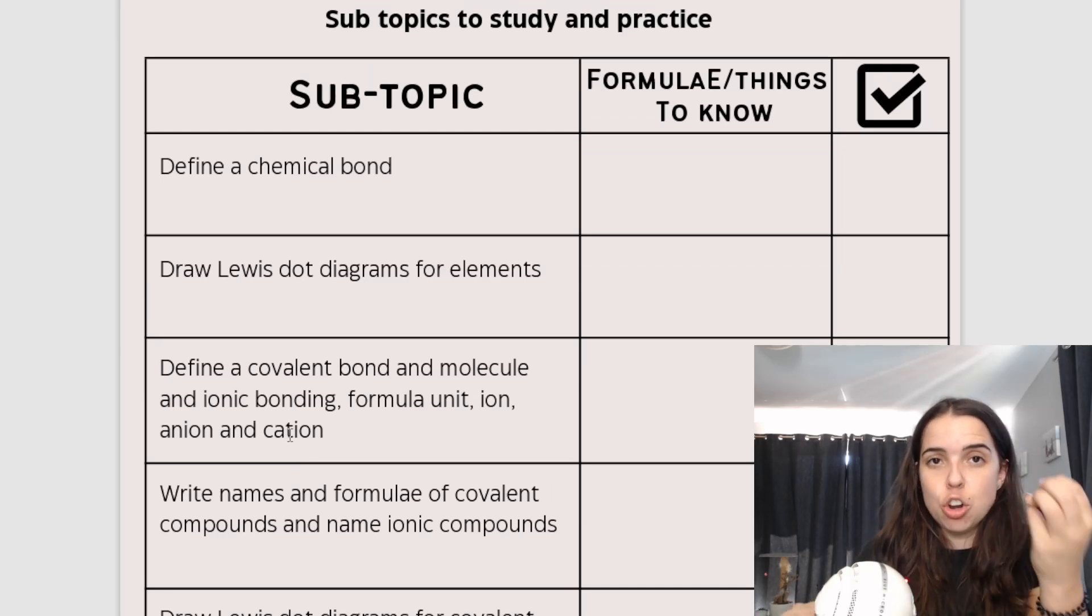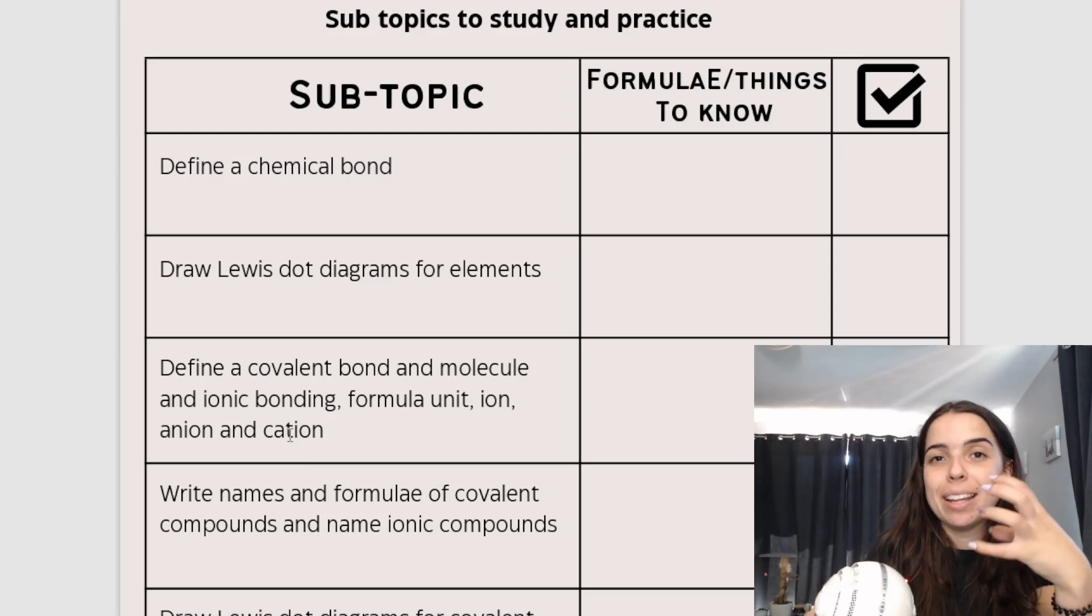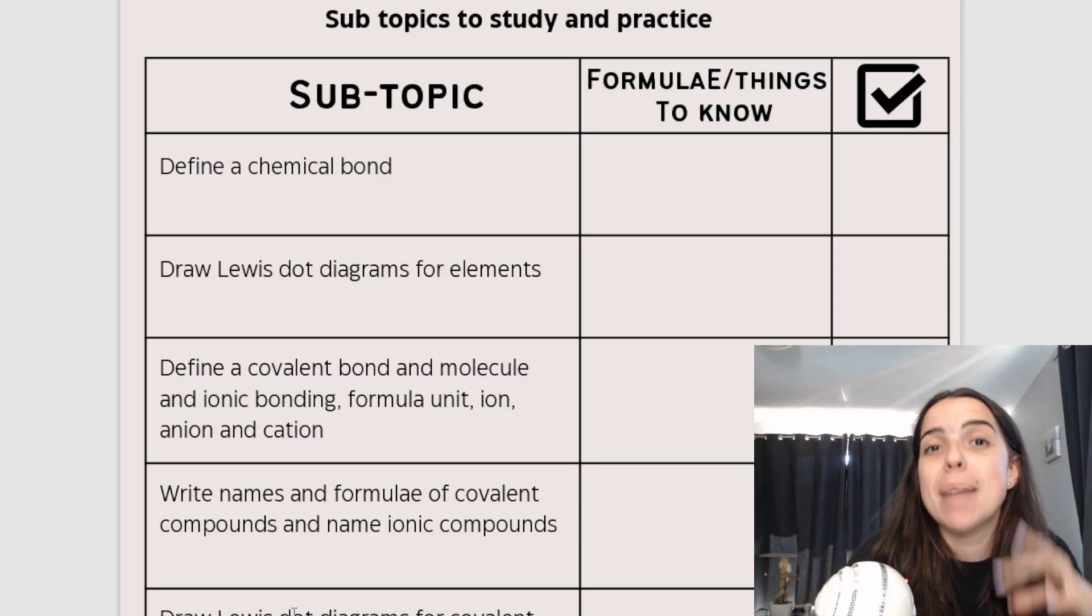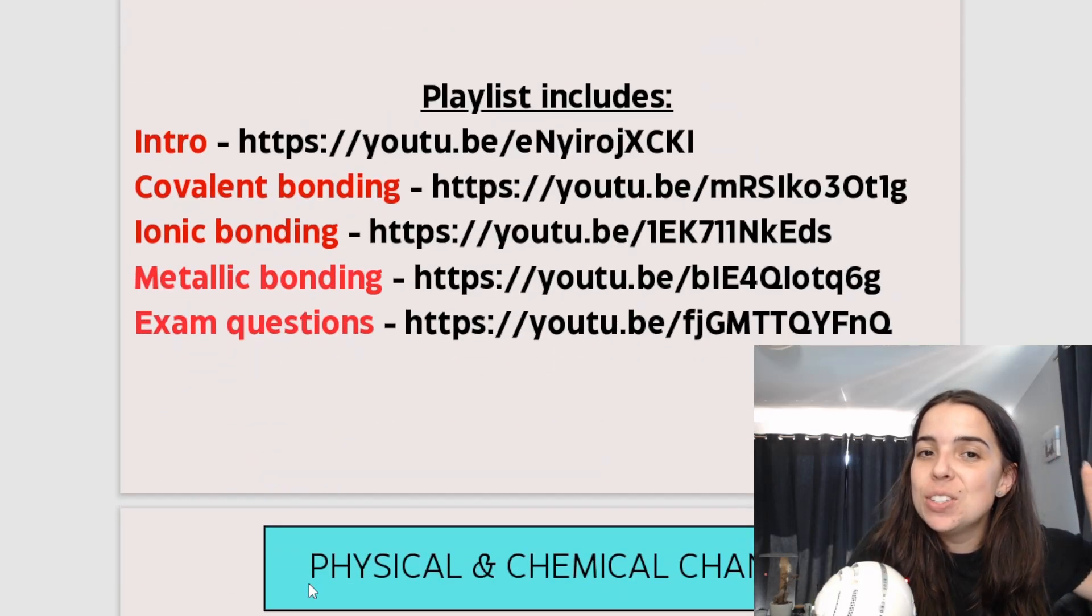We've got three types of bonding: covalent, which is non-metal and non-metal; we've got ionic, which is a metal and a non-metal; and we've got metallic bonding, which is within a metal. So you will learn those three types. Again, lots of videos for you to go and check out.